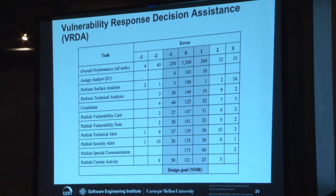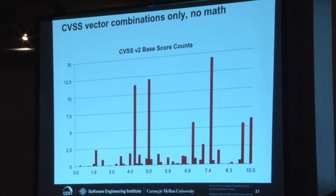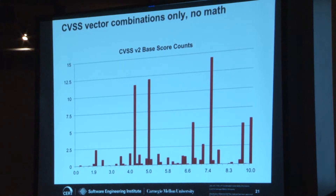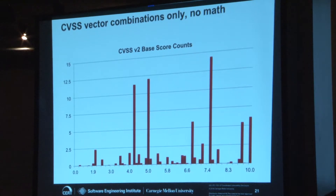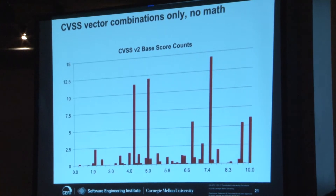Another option for CVSS — looking at the distribution of base score counts, there's a whole lot of 7.5s and a whole lot of 4.3s. 4.3 is cross-site scripting, 7.5 is probably unauthenticated remote access with only partial compromise. Instead of having the math in CVSS, it might be sufficient to map combinations of vectors to high/medium/low directly, and kind of do away with the fancy math part of it.